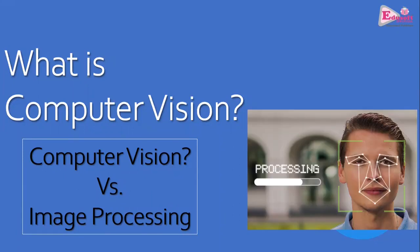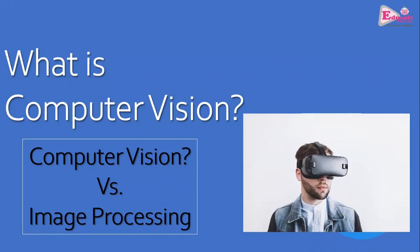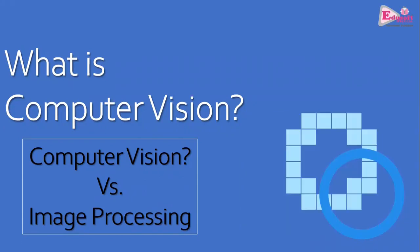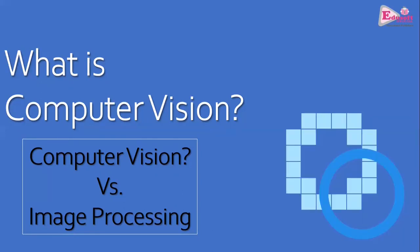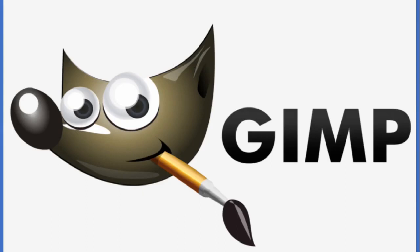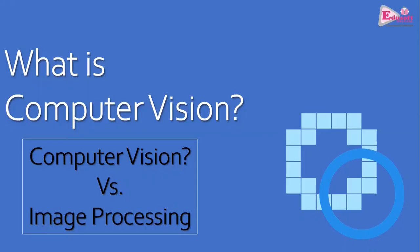Computer vision basically deals with data related to graphics — that is images and videos. When we talk about images and videos, another term comes across: image processing. We have to understand how they are different and how they look alike. There is a very thin line of difference between the two.